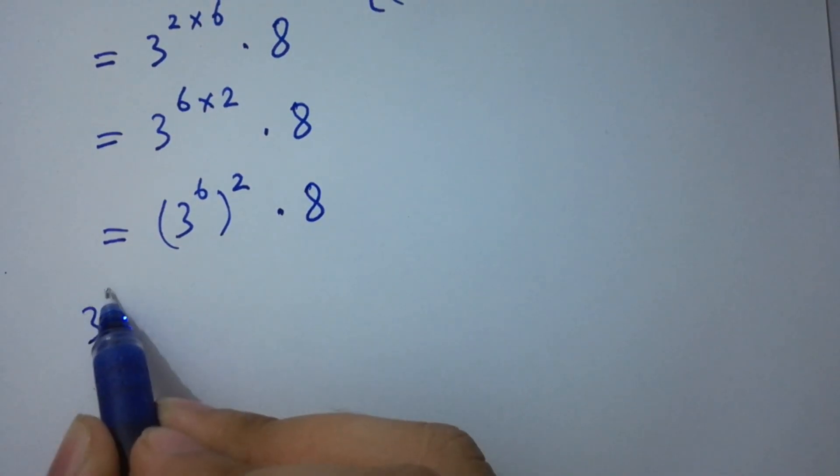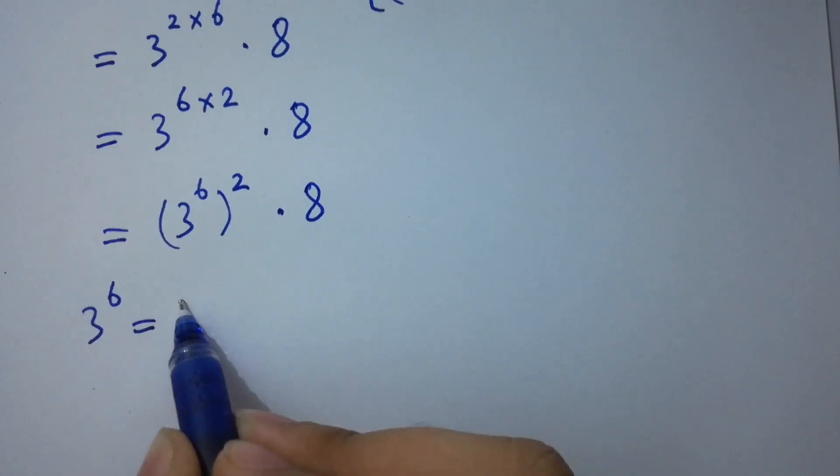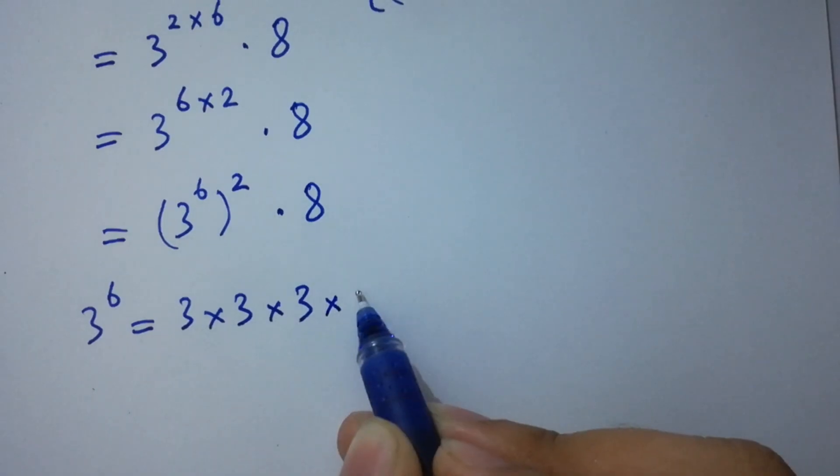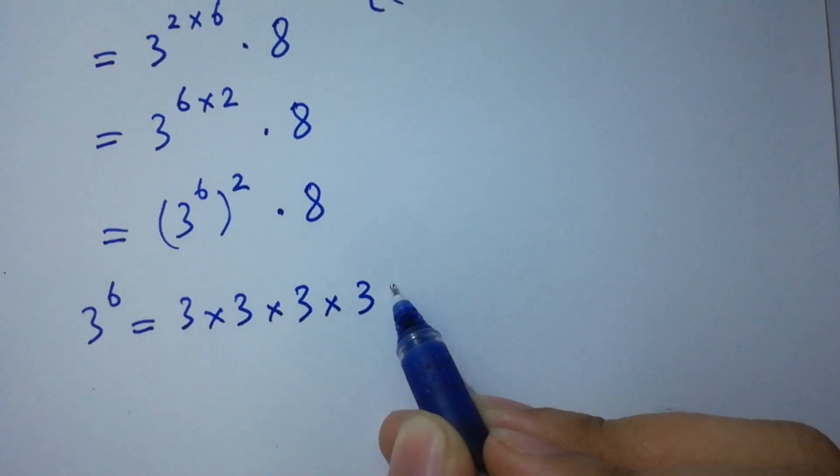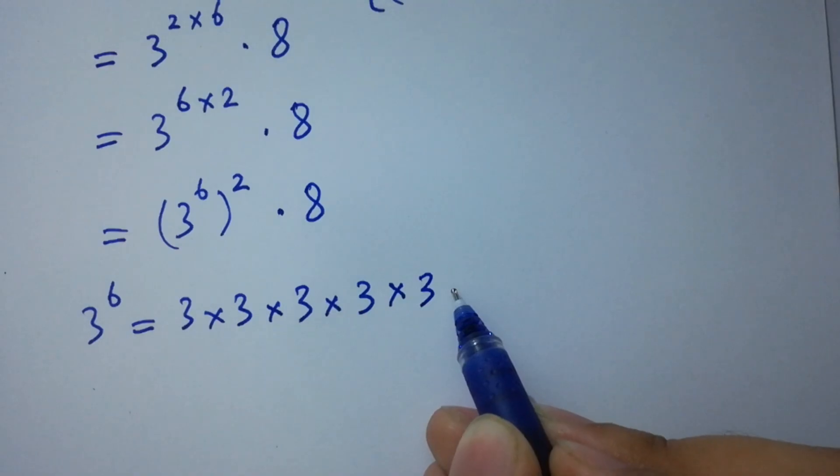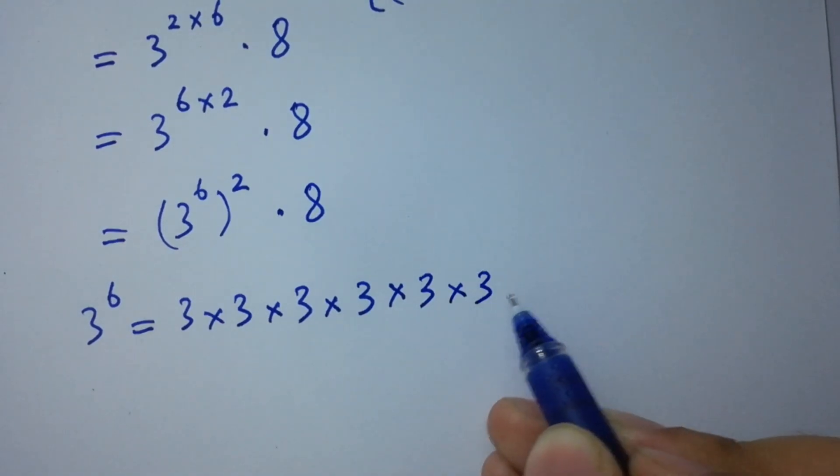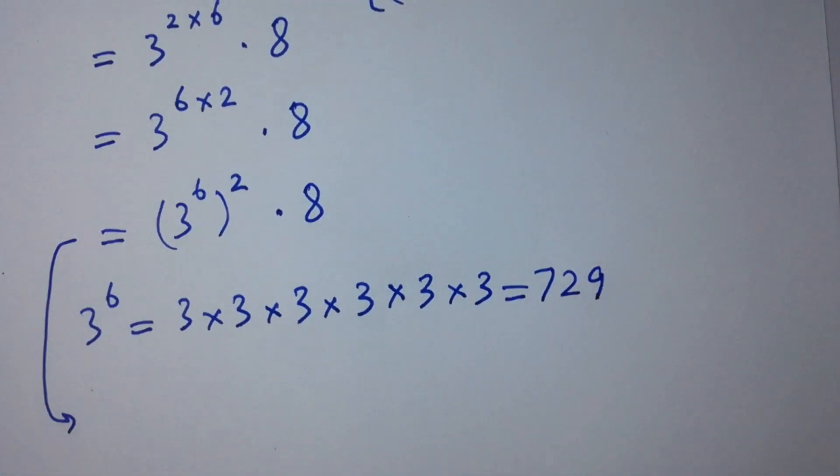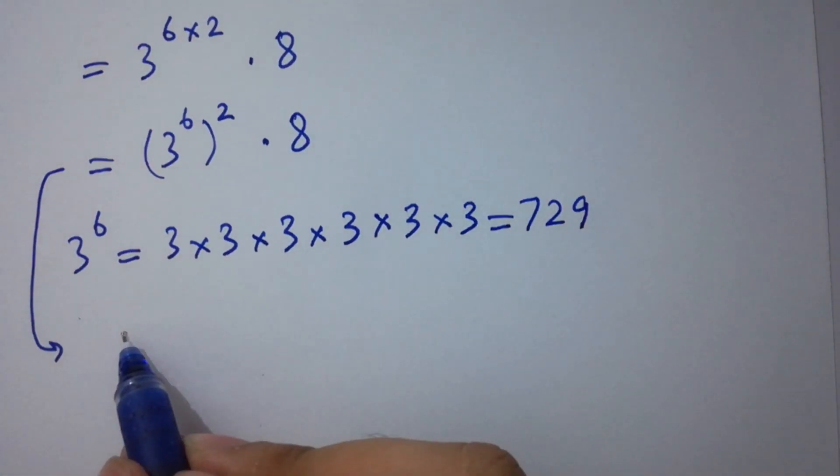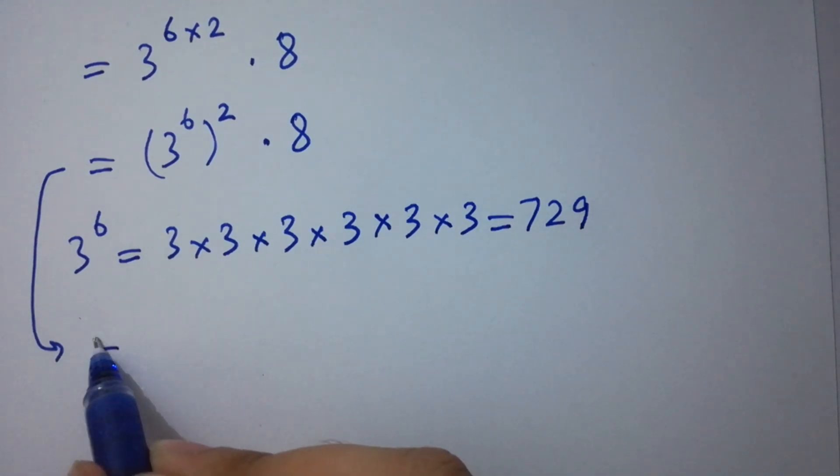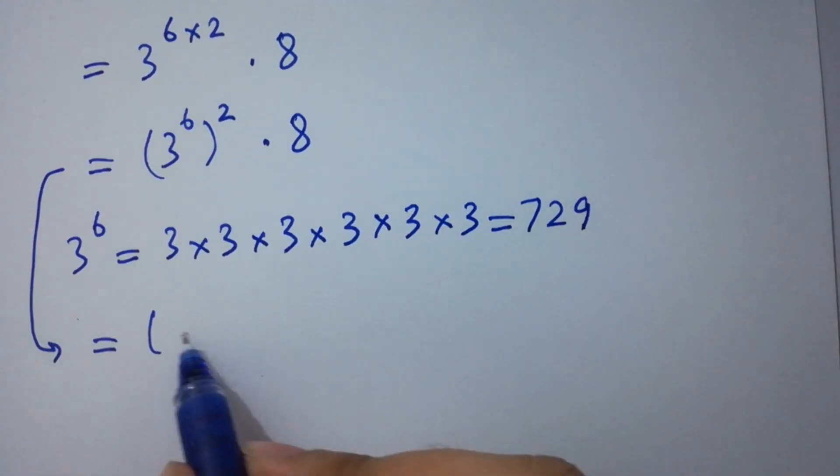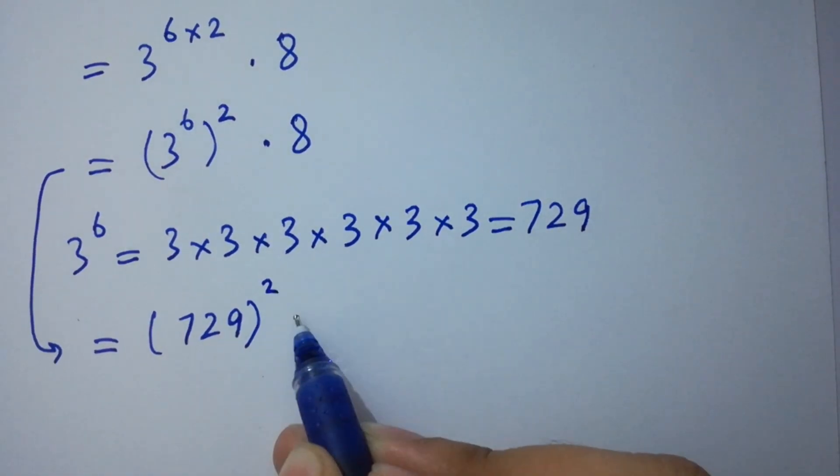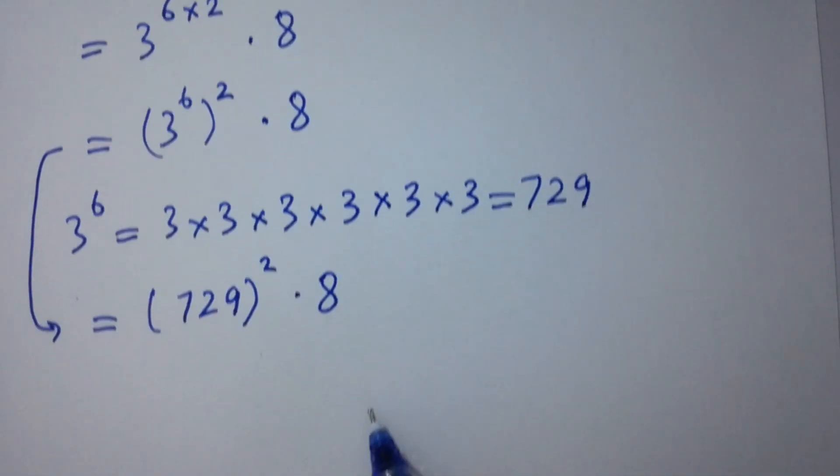It will be 8 times 3 to the power 6. 3 to the power 6 equal to 3 times 3 is 9, 9 times 3 is 27, 27 times 3 is 81, 81 times 3 is 243, and 243 times 3 is 729. So it will be 729 to the whole power 2 times 8.